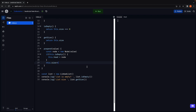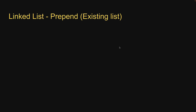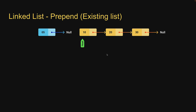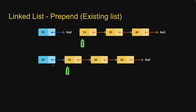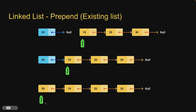Let's proceed to step 3 where we address the case where the list is not empty. Let's assume we are starting with a list that contains 3 nodes. Head is pointing at the first node, each node points at the next node, and the last node points at null. To add a new node at the start, make the newly created node point at the head node, and make the newly added node the head of the list. This ensures connectivity between the newly added node and the existing list, while also ensuring head continues to point at the first node.